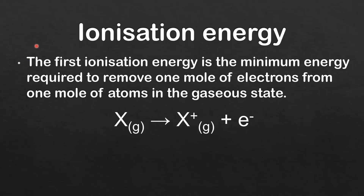The first ionization energy is the minimum energy required to remove one mole of electrons from one mole of atoms in the gaseous state. This equation represents the first ionization energy for an atom: one mole of atoms in the gaseous state forming one mole of positive ions in the gaseous state and one mole of electrons.